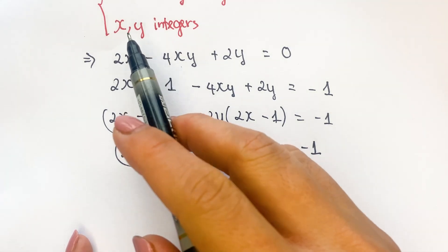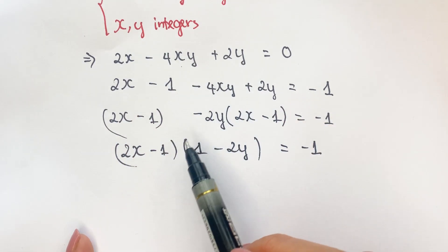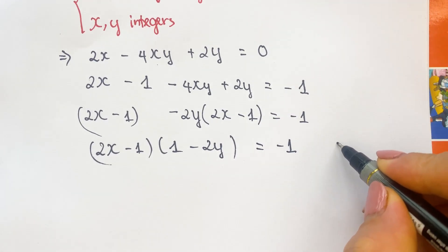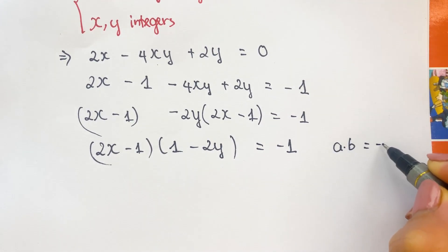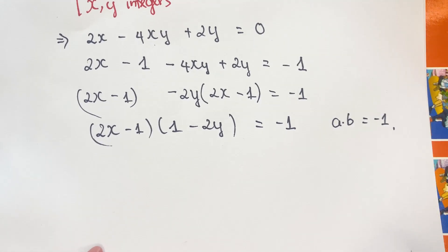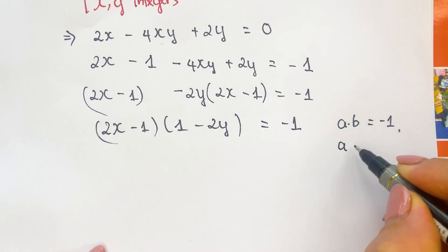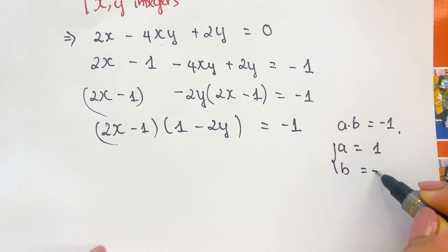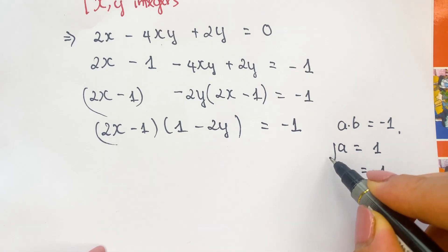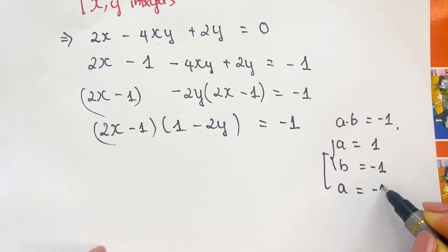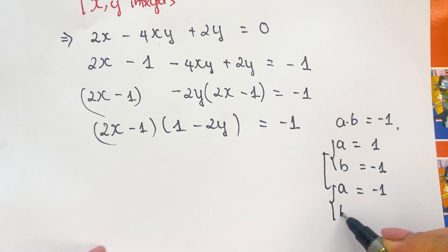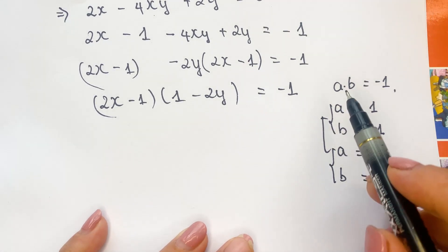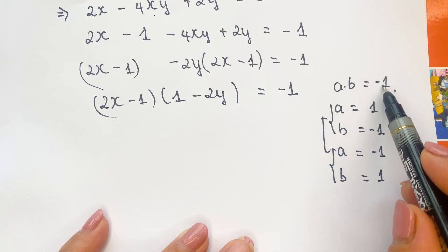For the requirement here — x and y are integers — therefore we can have a times b equals minus 1. For case 1, a equals 1 and b equals minus 1. For case 2, a equals minus 1. So a and b belong to the divisors of minus 1.